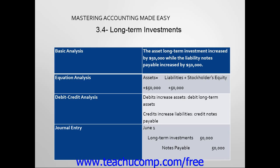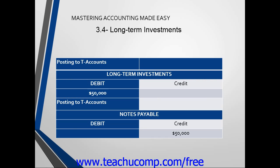The next step would be to take the journal entry and post it to a T-account. Long-term investments is debited $50,000, while notes payable is credited $50,000. Also note that in this example, we are showing the purchase of a long-term investment. The notes payable portion, the actual loan from a bank, would be a separate transaction and show separate T-accounts.